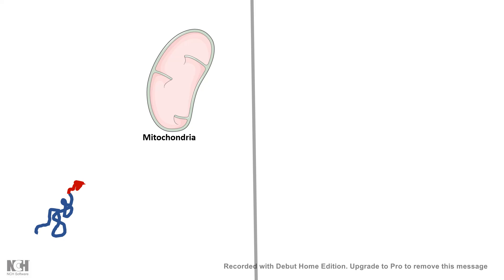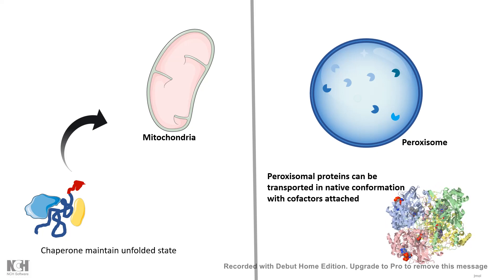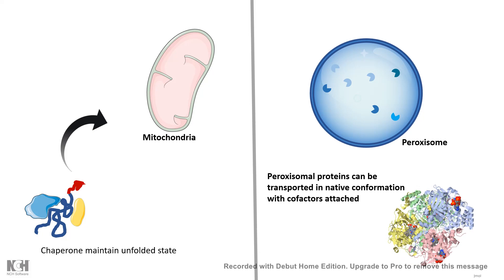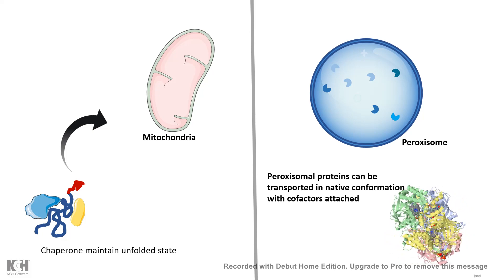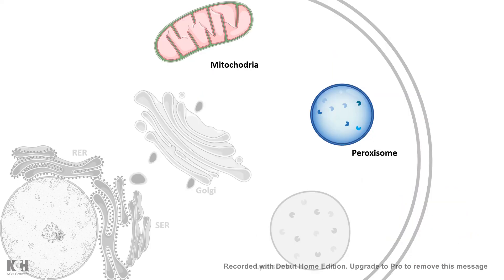Mitochondrial protein transport differs from peroxisomal transport in an important way. For mitochondria, proteins must be bound to chaperones and maintained in an unfolded state before delivery. In contrast, peroxisomal proteins — such as catalase — can be transported to the peroxisome in their native, folded state, even with cofactors attached; for example, the heme group of catalase remains attached during transport.